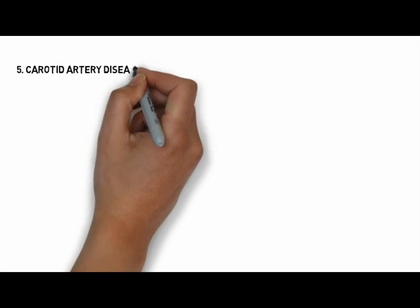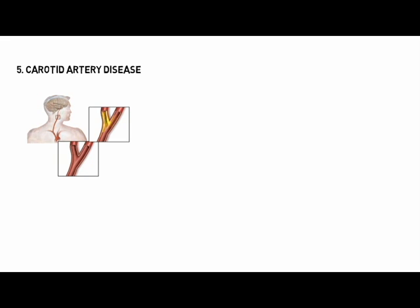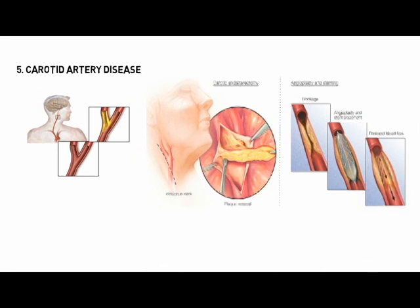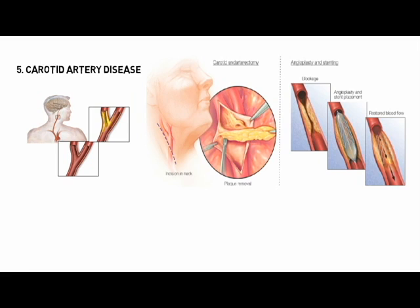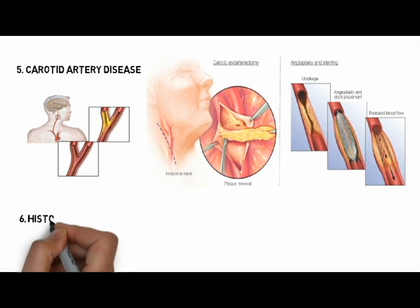Fifth, carotid or other artery disease. The carotid arteries in your neck supply blood to your brain. A carotid artery narrowed by fatty deposits from atherosclerosis may become blocked by a blood clot. Carotid arteries are treated by neurosurgeons through carotid endarterectomy — a procedure in which an incision is made in the neck and plaque is removed — or carotid artery angioplasty and stenting, an endovascular procedure requiring no surgical incision.